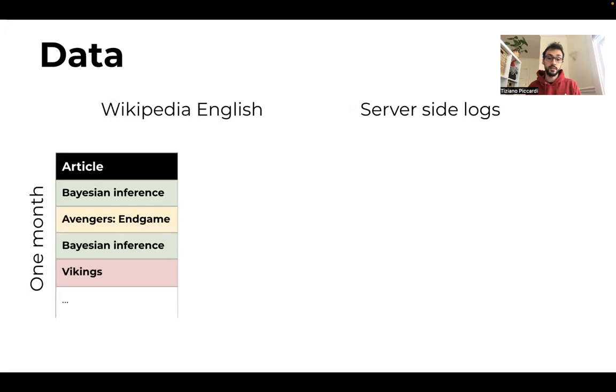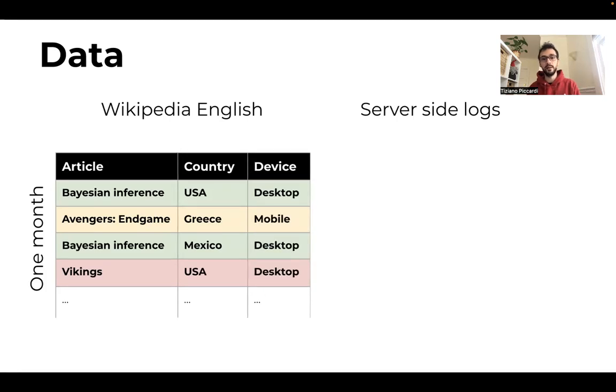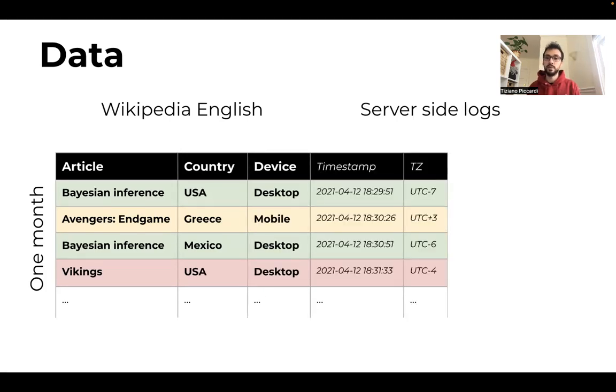To understand and to answer this question, we investigate one month of anonymized server log from Wikipedia in English. The dataset includes the title of the page loaded, the country from where the request is originated, the device user, desktop or mobile, and the timestamp with the relative time zone.